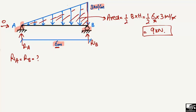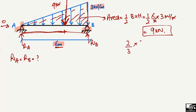The 9 kilonewton load acts at the centroid of the triangular load. The distances from each end are unknown, but we know the total length is 6 meters. The distance from the zero end is two-thirds of 6 meters, which equals 4 meters. The distance from the maximum load end is one-third of 6 meters, which is 2 meters. So the resultant is at 4 meters from A and 2 meters from B.